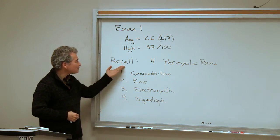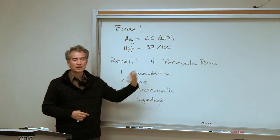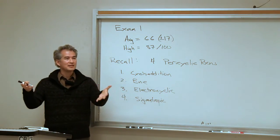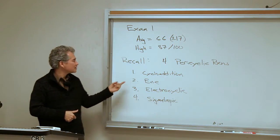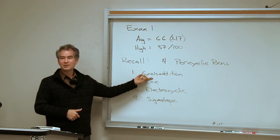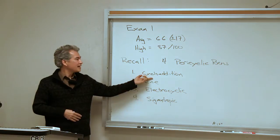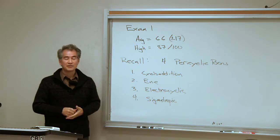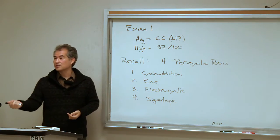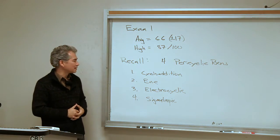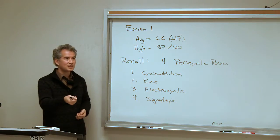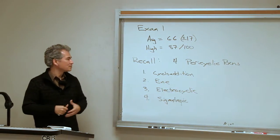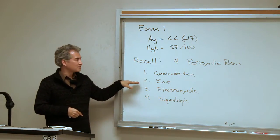Let me remind you of where we're at. In this class, we're going to talk about four classes of pericyclic reactions — you can group pretty much every type of pericyclic reaction into one of these four groups. We're still talking about cycloaddition reactions. We spent the last couple of lectures on four plus two cycloadditions: the Diels-Alder reaction, hetero Diels-Alder reactions, inverse electron demand Diels-Alder reactions, and the orbital symmetry considerations that go along with those.